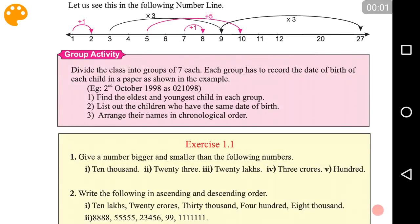Okay, so let's see the addition and multiplication in the number line. So here if you see, we have the number line starting from 1, 2, 3, 4 and it goes up to 27 here.